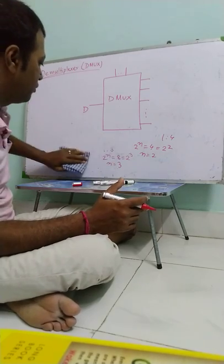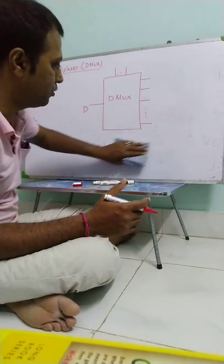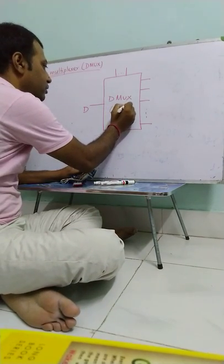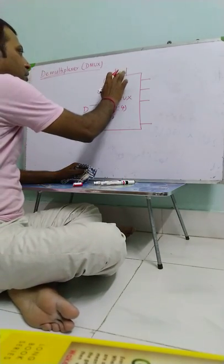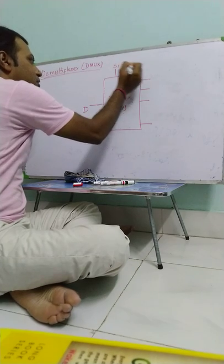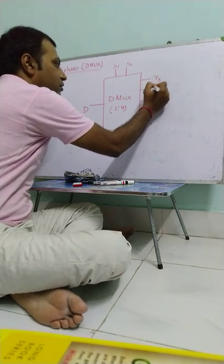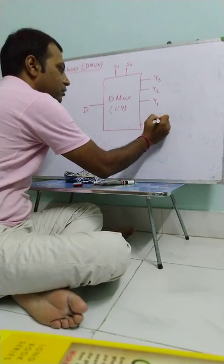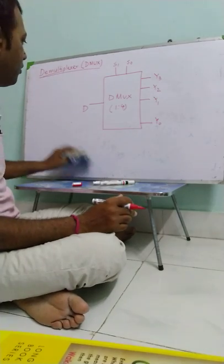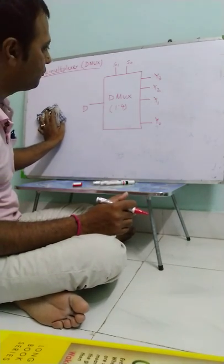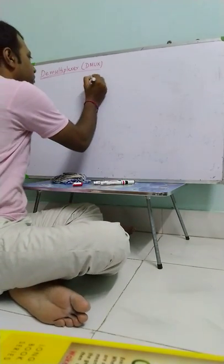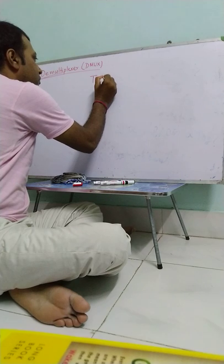Now, for 1 to 4 demux, select lines are 2, S1 and S0. Outputs are 4. So this is 1 to 4 demux. Now we draw the truth table of 1 to 4 demux. Outputs are 4.